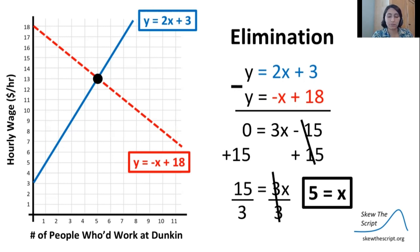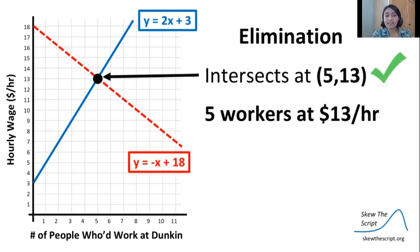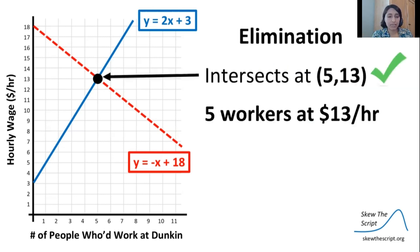That matches what our prediction was and what we saw with our other method of solving. Now we can take that 5 and plug it back into either one of the equations and see that we get 13 once again. So intersection at (5, 13) — five workers being hired at $13 an hour. We verified that solution with both methods.